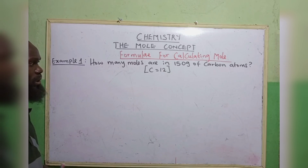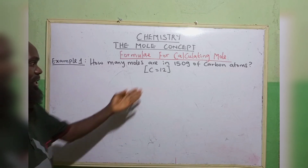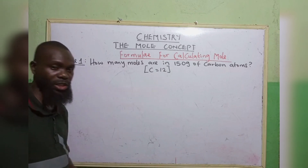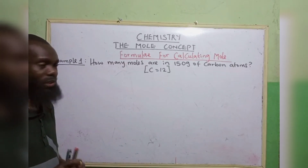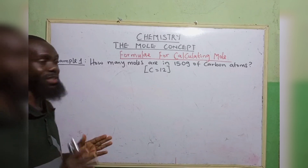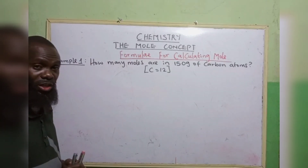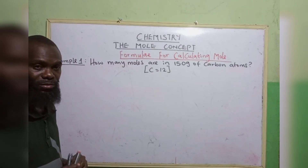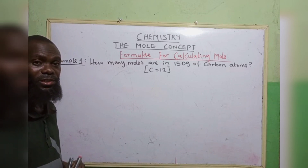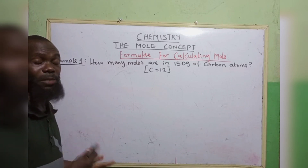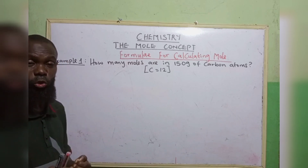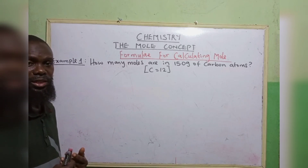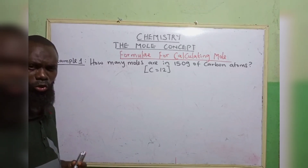Example 1: How many moles are in 15.0 grams of carbon atoms, where the atomic mass of carbon is given to be 12? To solve any question, first understand the question, then write out the parameters. Since we've written out the parameters, compute them with the given formulae, pick the formula to use, write it down, undergo your substitution, and then find the unknown variable.